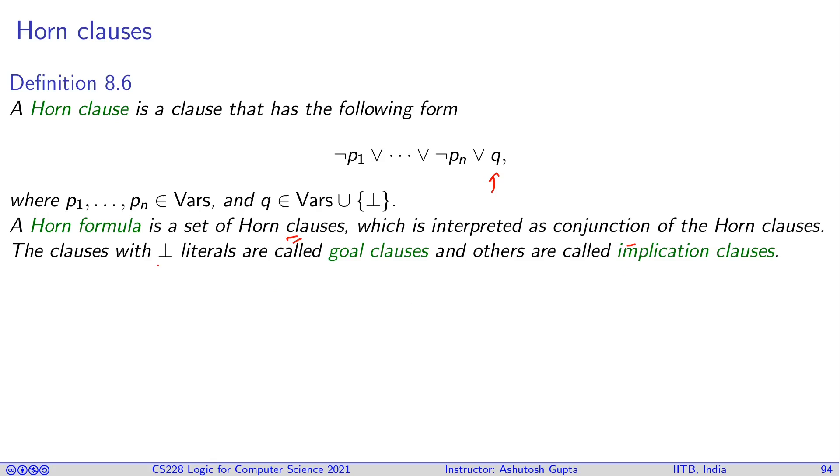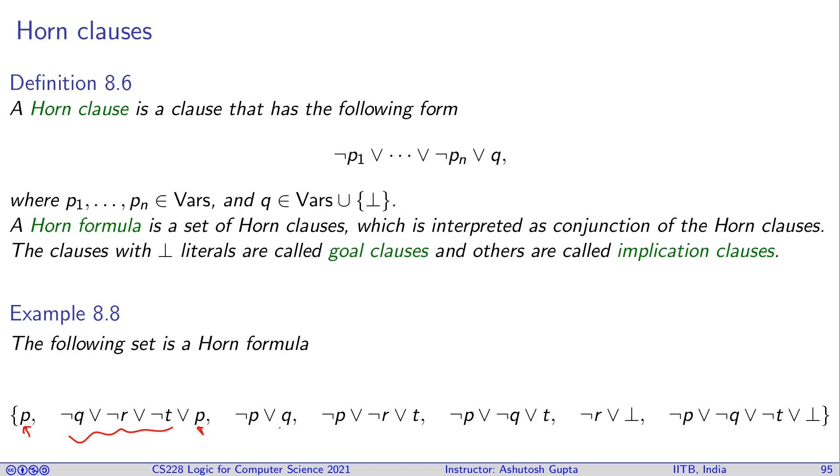The claim is that these are very efficient to solve. Let's look at an example. You have Horn clauses: you can have one positive literal with no others, one positive with all others negative, one positive and one negative, or nothing positive.